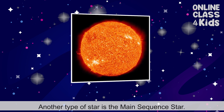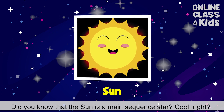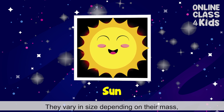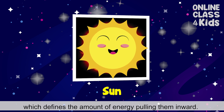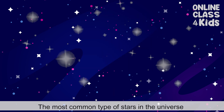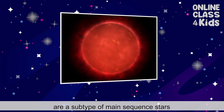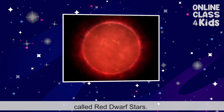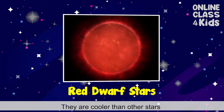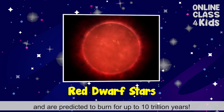Another type of star is the main sequence star. Did you know that the sun is a main sequence star? They vary in size depending on their mass, which defines the amount of energy pulling them inward. The most common type of stars in the universe are a subtype of main sequence stars called red dwarf stars. They are cooler than other stars and are predicted to burn for up to 10 trillion years.